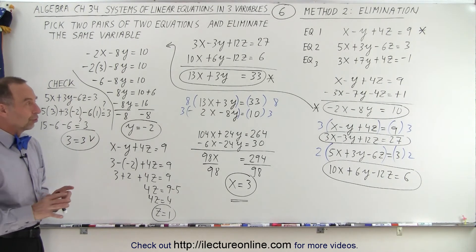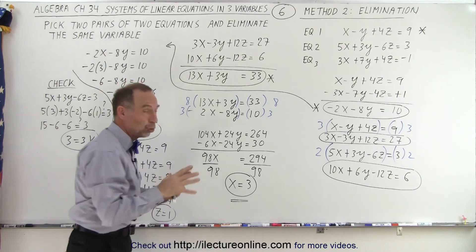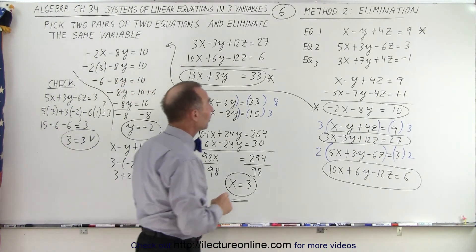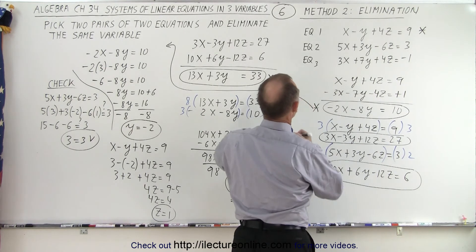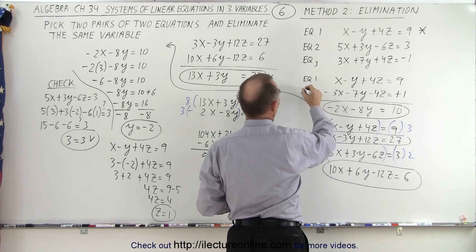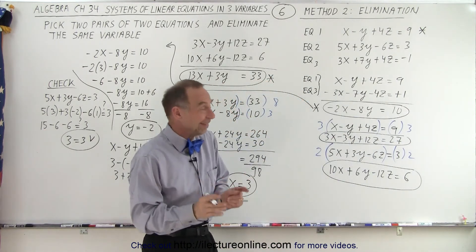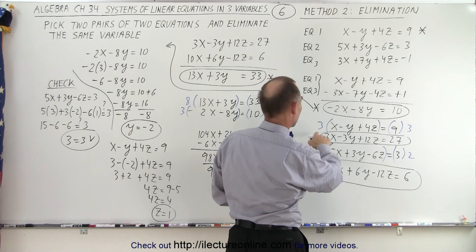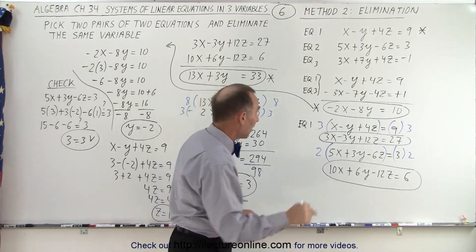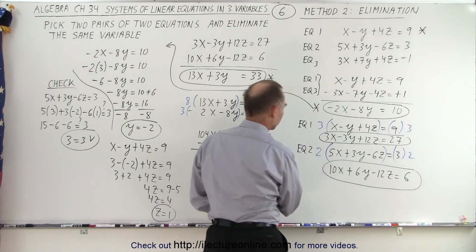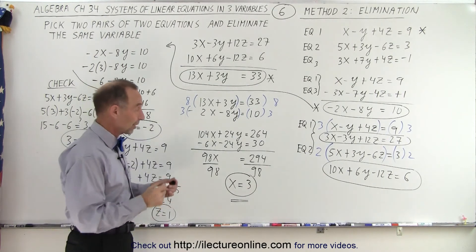So the question is: should we be careful about which equations we grab? Absolutely. You pick two pairs, and they have to be two different pairs of two equations. The first pair was equation one and equation three. The second pair was equation one and equation two. You can't pick equation one and three both times — the second pair must be different. Otherwise, it will not work.